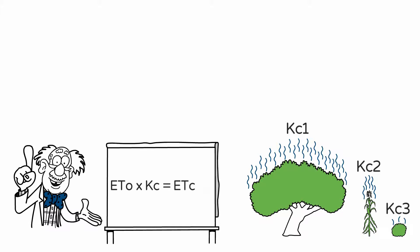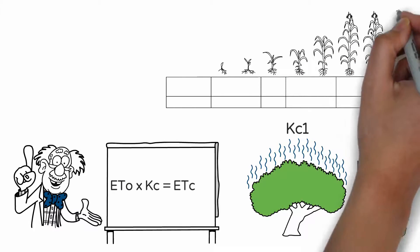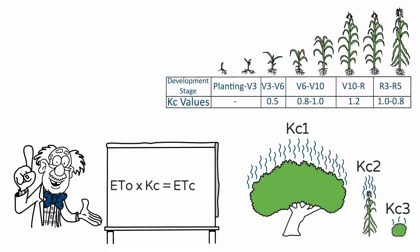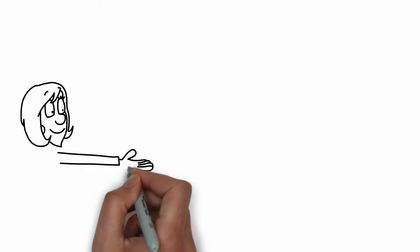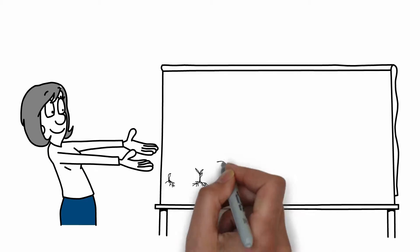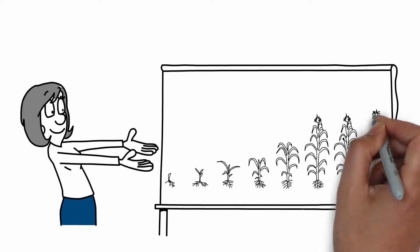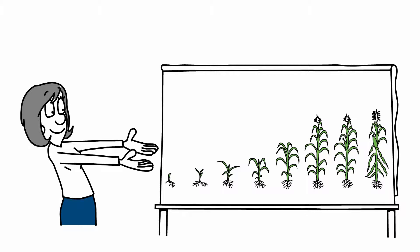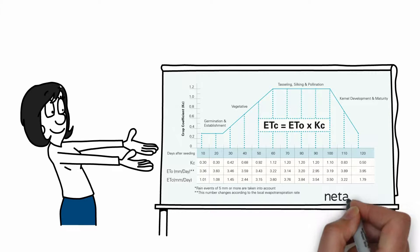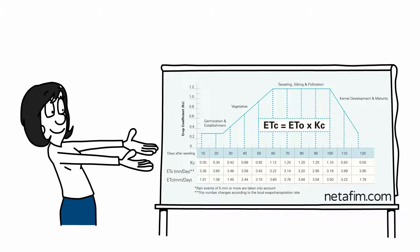Different crops will have different KC values, and for each specific crop, KC will change according to its development stage. What you need for scheduling your irrigation along the season is the different crop factors for the different crop stages. They usually come in a table like this. You can find them on NetFM's website on the crop section.